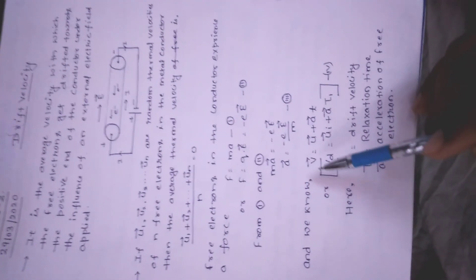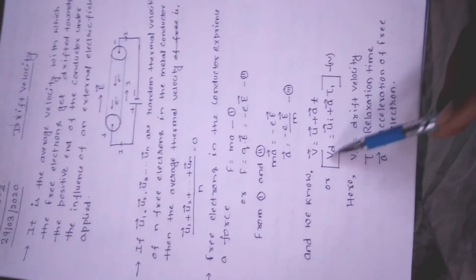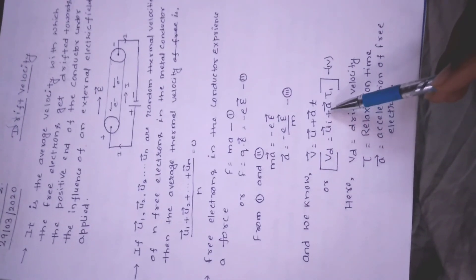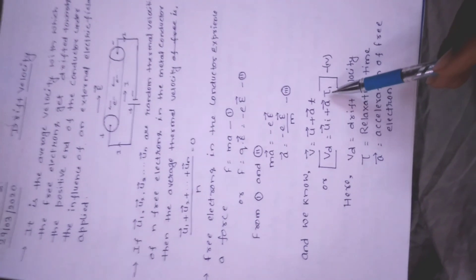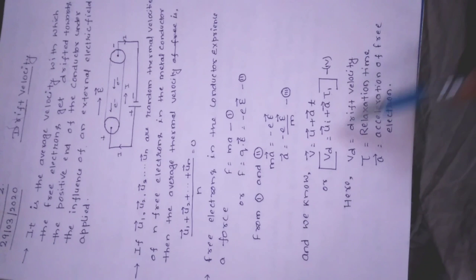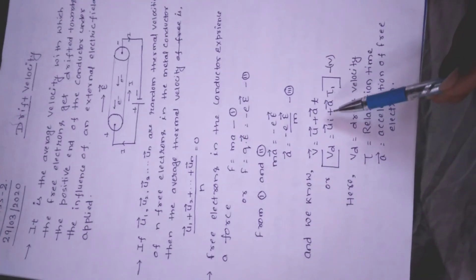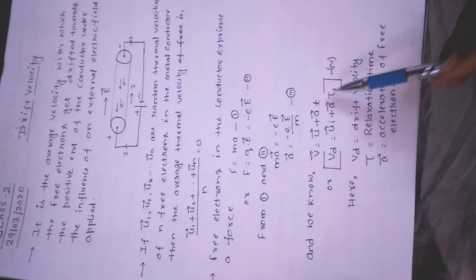11th के laws of motion chapter से formula: V = U + AT। इसी को drift velocity के लिए लिखें: VD = Ui + A·tau, जहाँ tau relaxation time है। यह हमारा equation number 4 है।